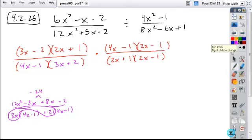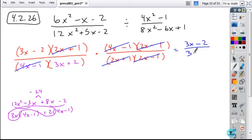Once I get everything set up, I can now go through and look to simplify anything that I can. As I go through here, my 2x plus 1s cancel, my 4x minus 1s cancel, my 2x minus 1s cancel. And so all I'm left with is 3x minus 2 over 3x plus 2.